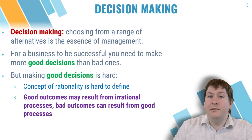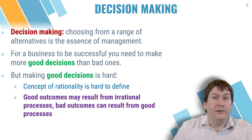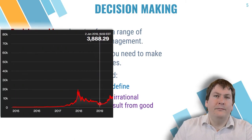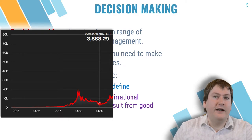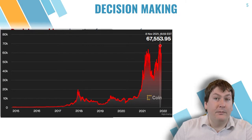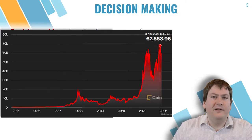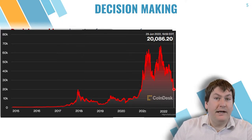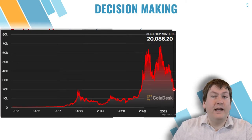Sometimes a good outcome can come from an irrational decision, or a bad outcome can result from a good process. For example, let's say you did something most people would consider irrational, like investing your whole life savings into bitcoin. If you did this in 2019 and sold in late 2021, you would have had a very good outcome and made a lot of money. The danger is that it might give you the false idea that this was a good decision. If you tried repeating it — reinvesting your earnings back into bitcoin in November 2021 — it would have had a very negative outcome after bitcoin crashed. It's the process that's important, not the outcome. Investing everything in bitcoin is more gambling than investing, so the process was bad even if the outcome was good in some cases.